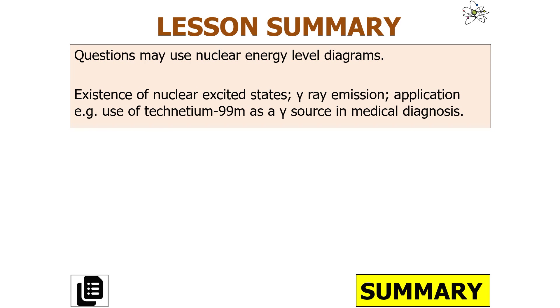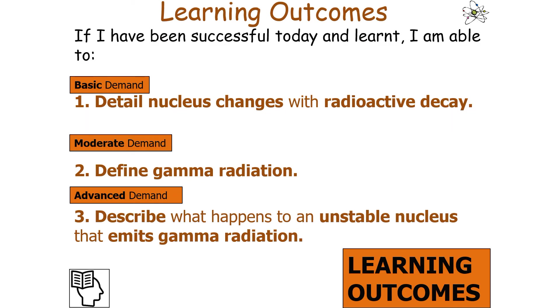If we've been successful and learned in today's lesson, we'll be able to detail how nuclei change with radioactive decay, define what gamma radiation is, and describe what happens to an unstable nucleus that emits gamma radiation.